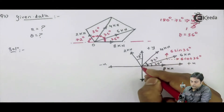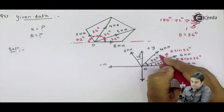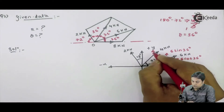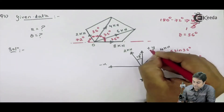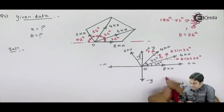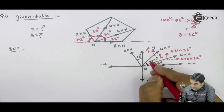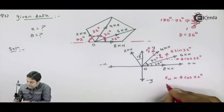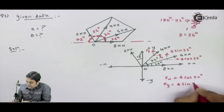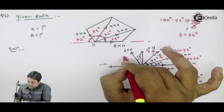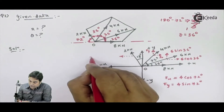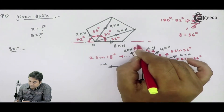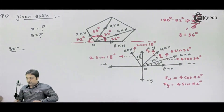For 4 kN inclined at 72° with horizontal: Fx = 4 cos 72° and Fy = 4 sin 72°. For 2 kN, since it is inclined with the vertical, the horizontal component will be 2 sin 18° (not 2 cos 18°). I have now marked all the forces and can calculate ΣFx, ΣFy, the resultant, and its location.